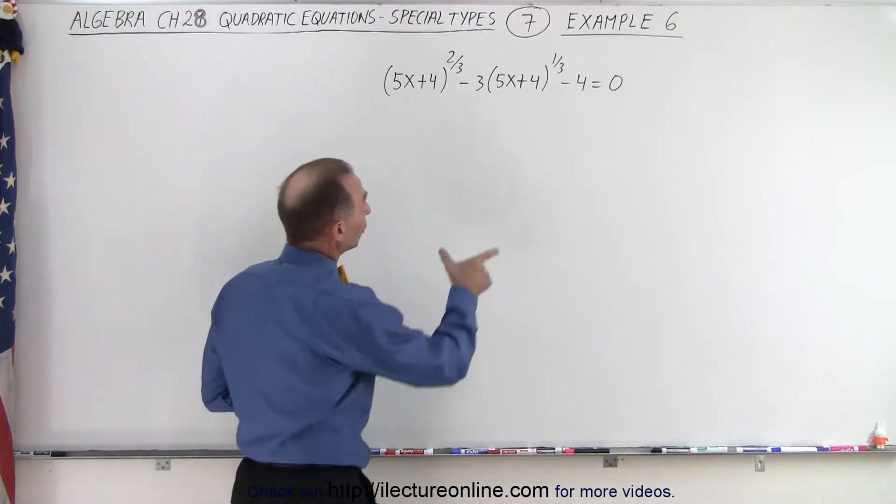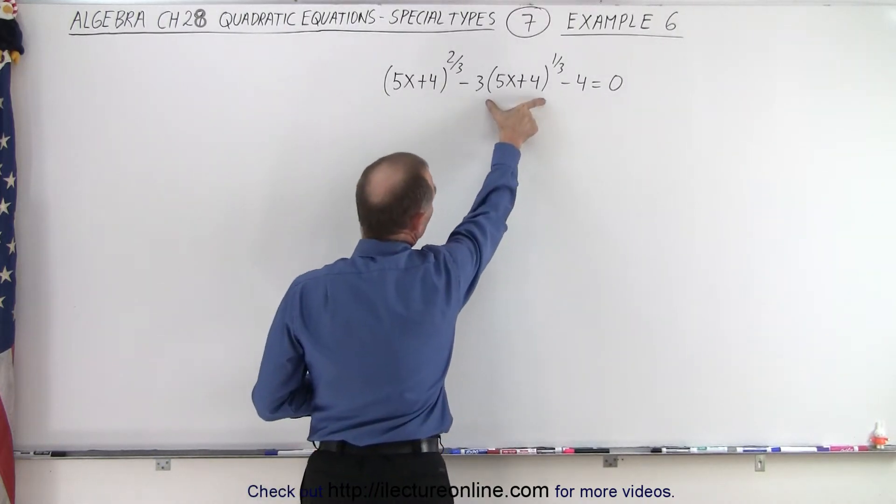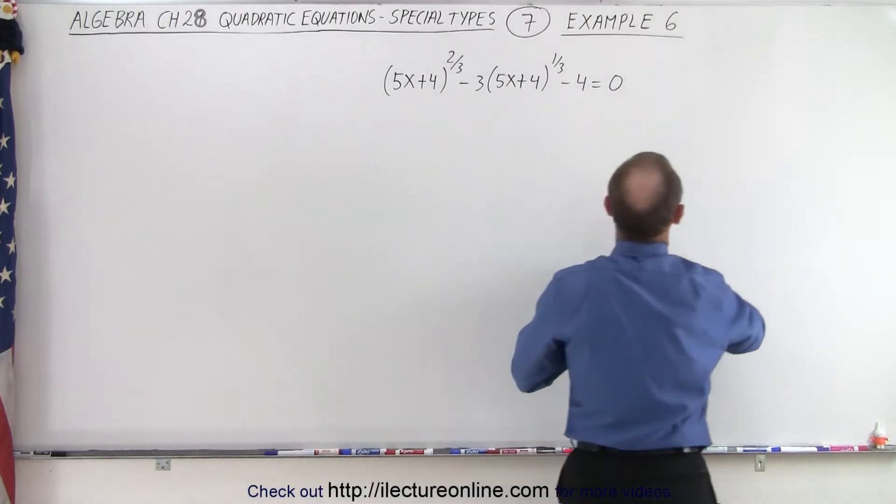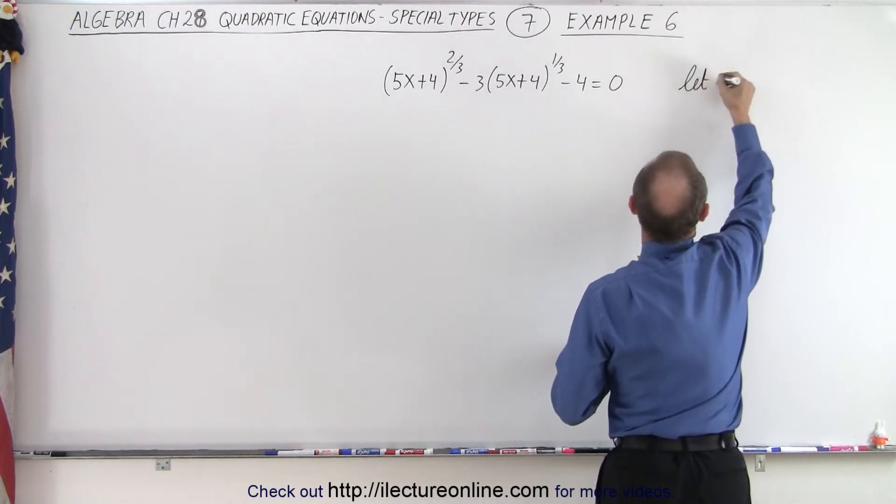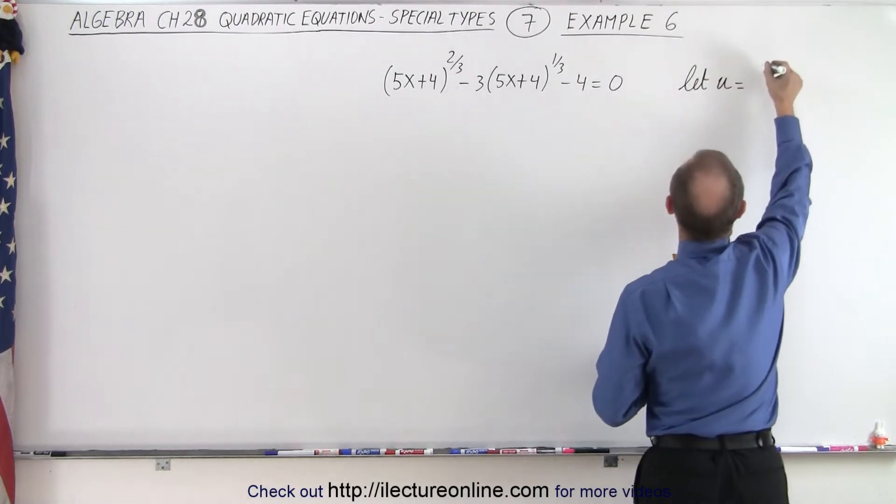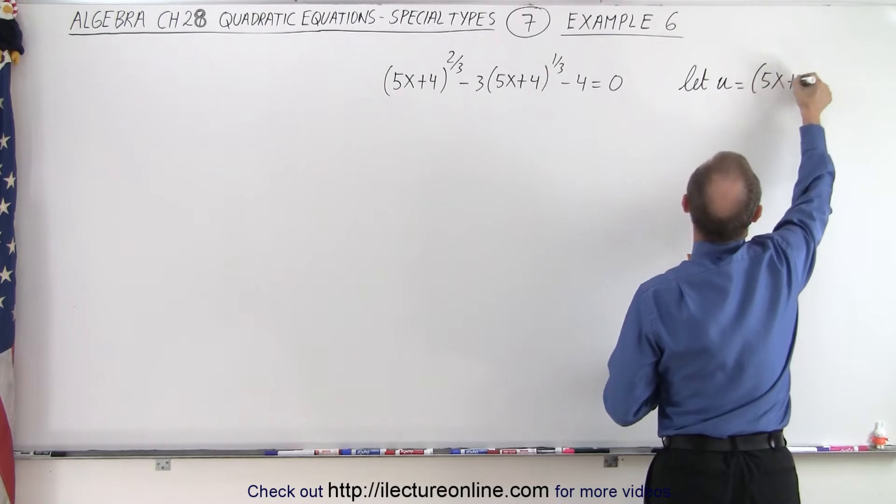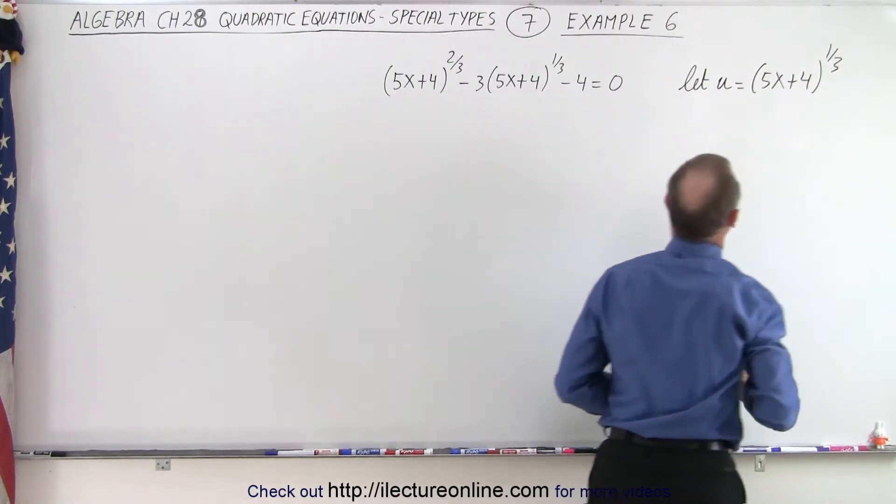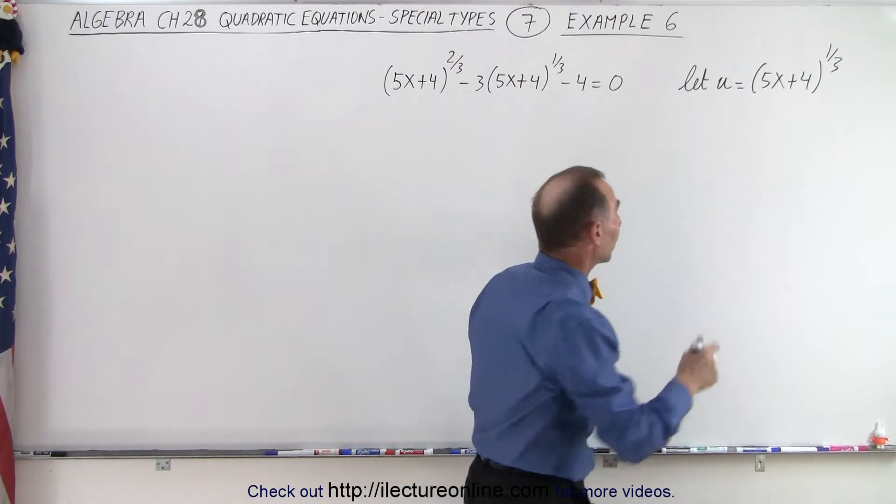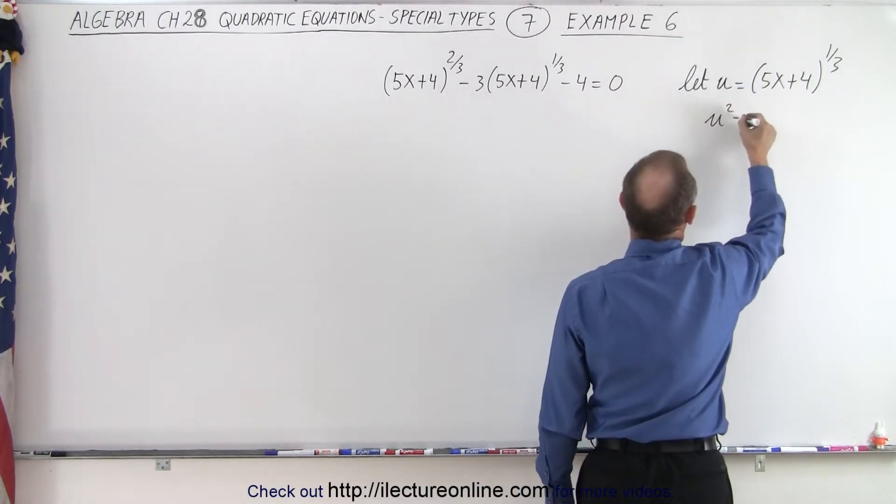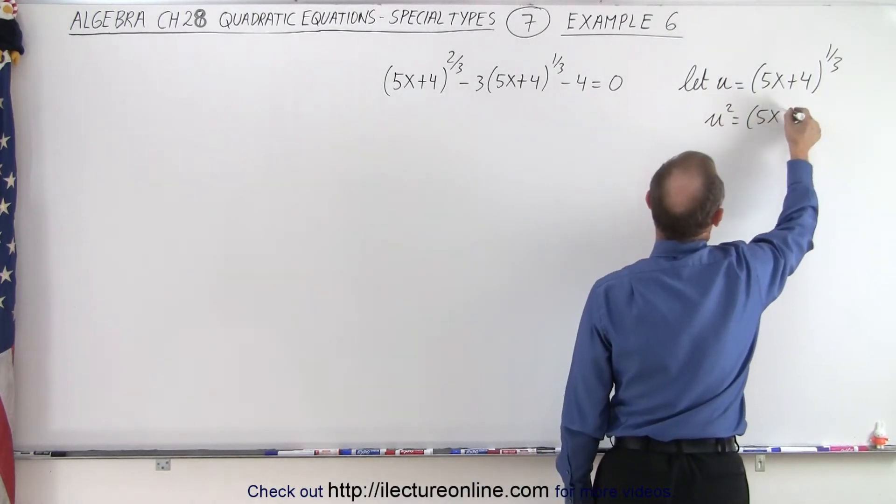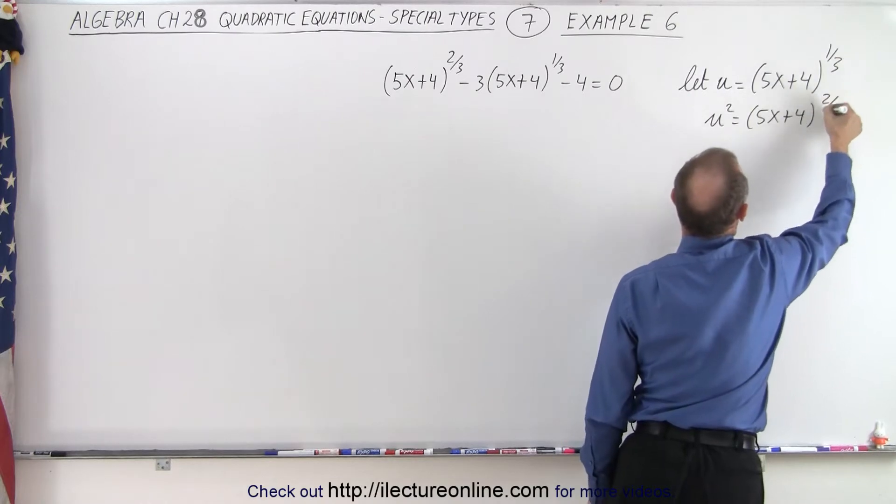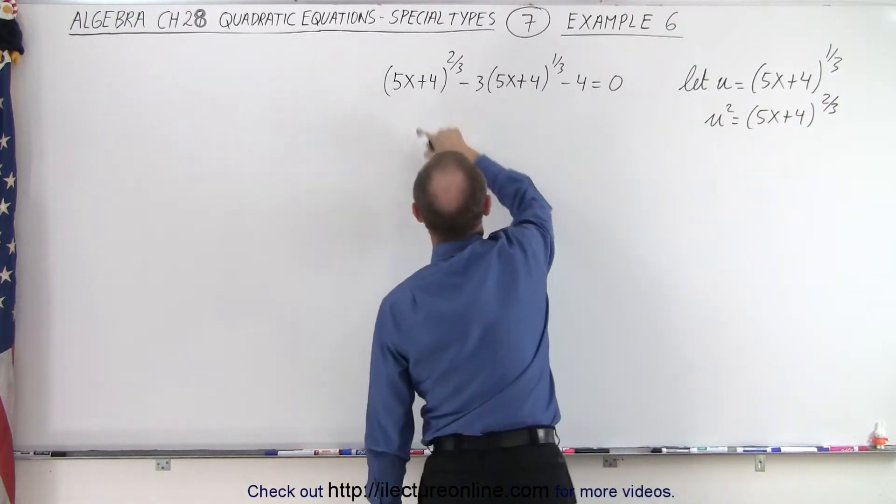It turns out we're going to let u equal what's here. In other words, we're going to let u equals the quantity 5x plus 4 to the 1/3 power. And then if we square both sides, we get u squared is equal to 5x plus 4 to the 2/3 power, which is exactly what we see over here.